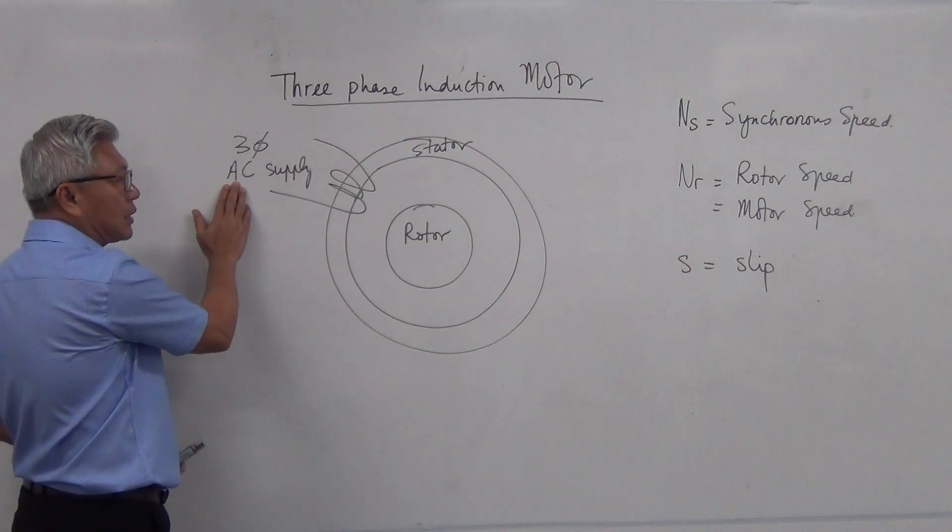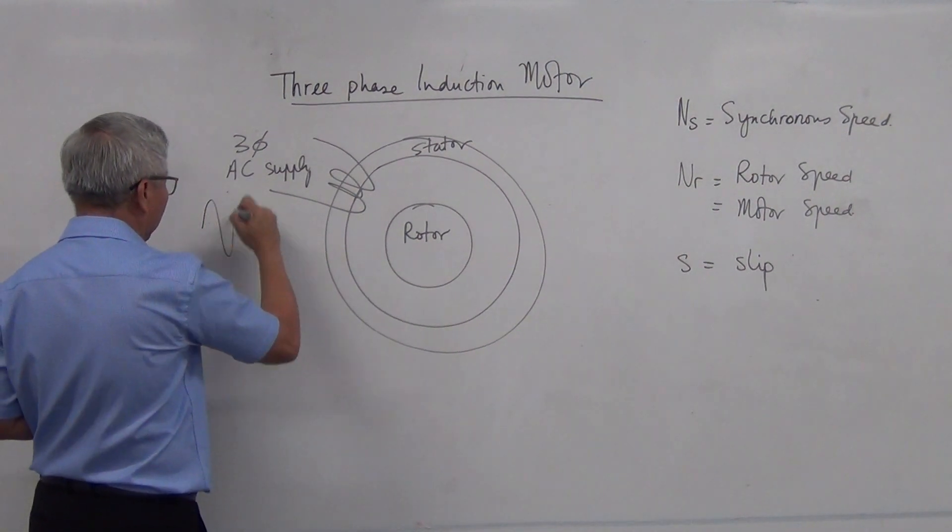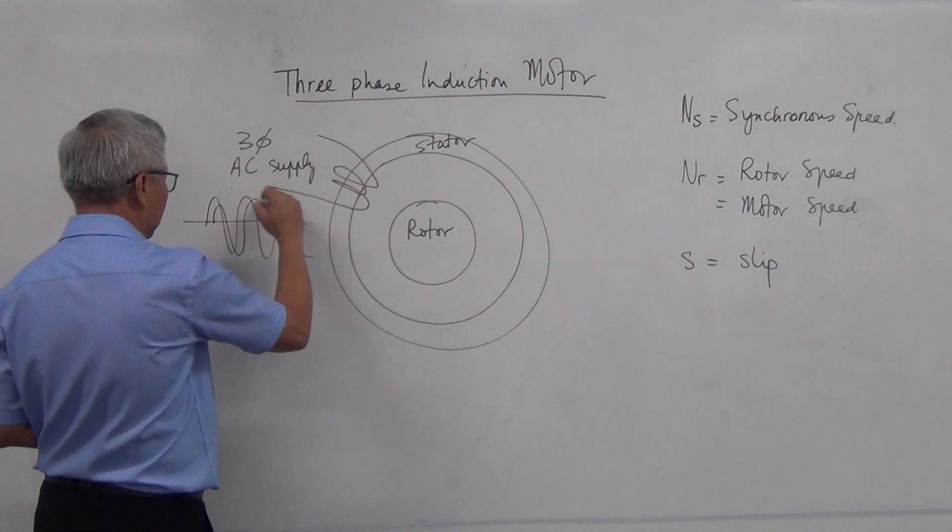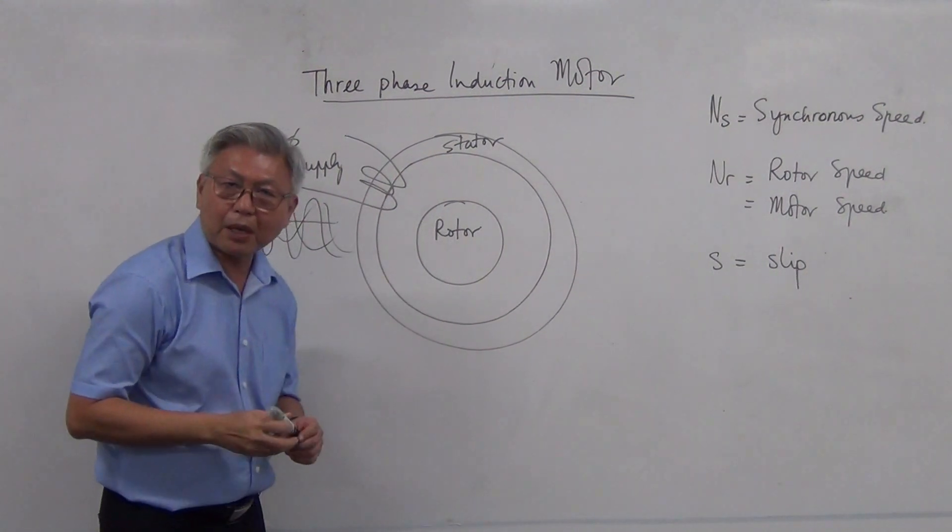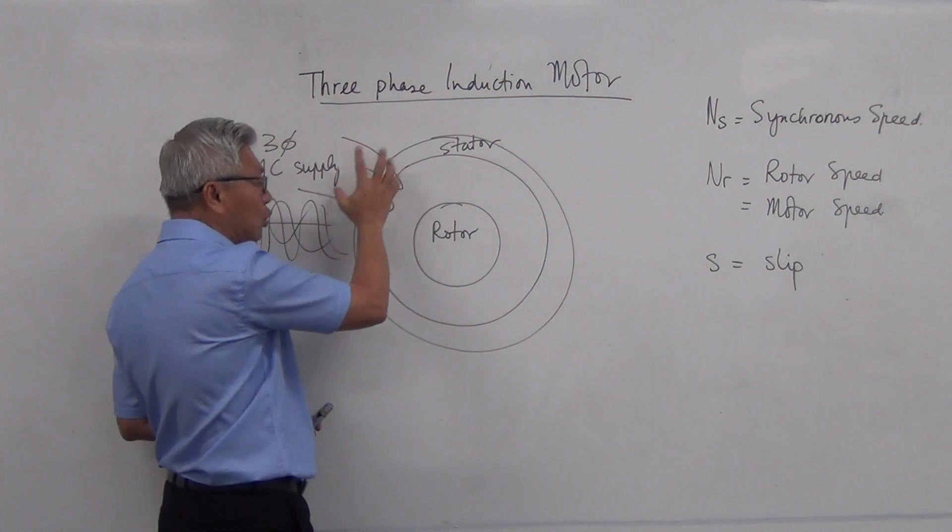Now, we supply a three-phase AC power supply to the stator. And AC is actually a sine wave. And it has three-phase. Three-phase AC power supply, the pulsating alternating current is going through.